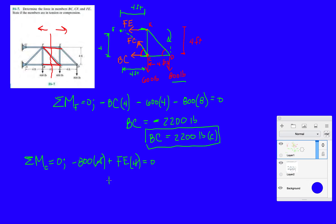The fours go away, and then you get FE is 800 pounds positive. So my assumption is correct. FE is in tension.